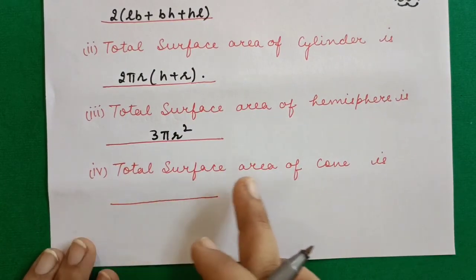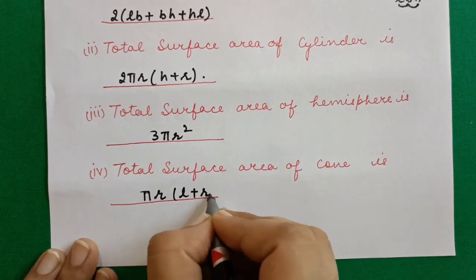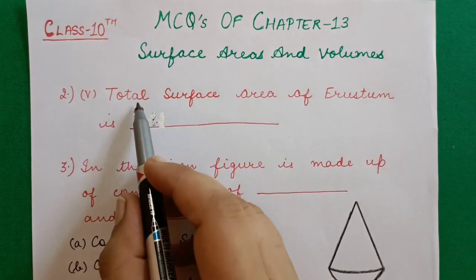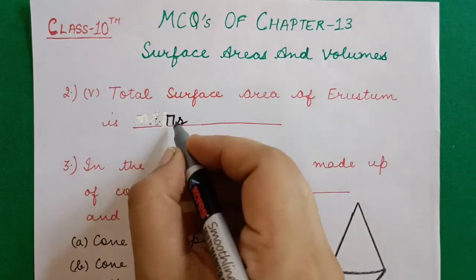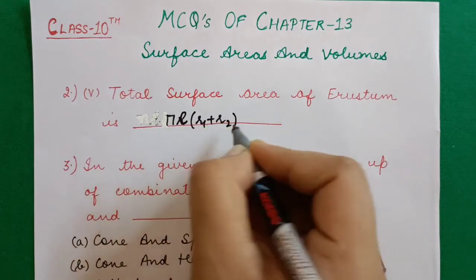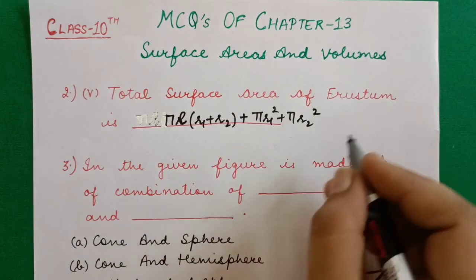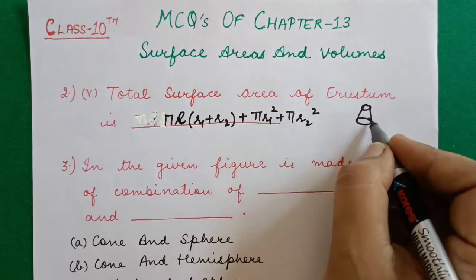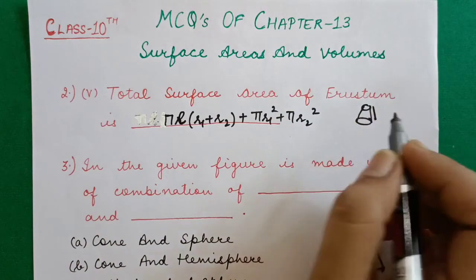Total surface area of cone = πr(l + r), where l is the slant height. Total surface area of frustum = πl(R1 + R2) + πR1² + πR2², where l is the slant height. The frustum's surface area includes the curved lateral part plus the areas of both circular bases, the bottom circle (πR1²) and the top circle (πR2²).